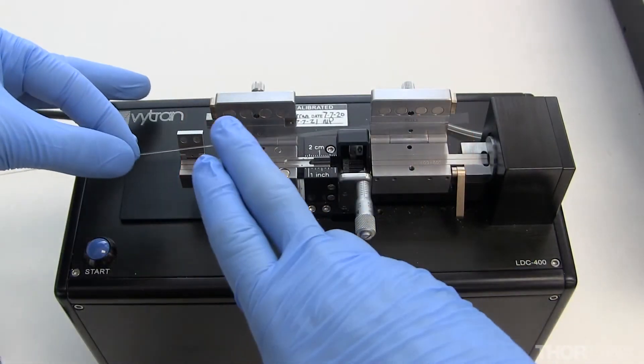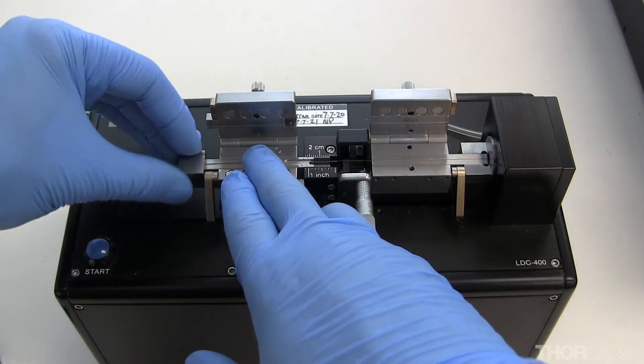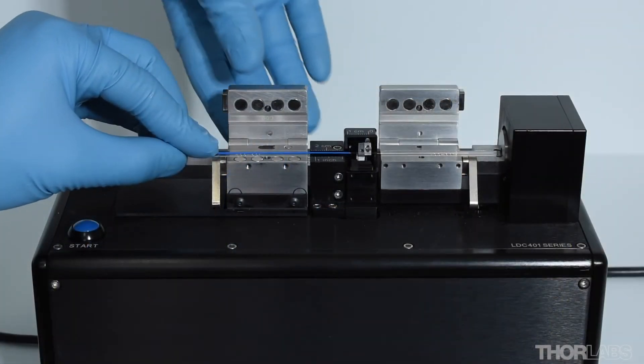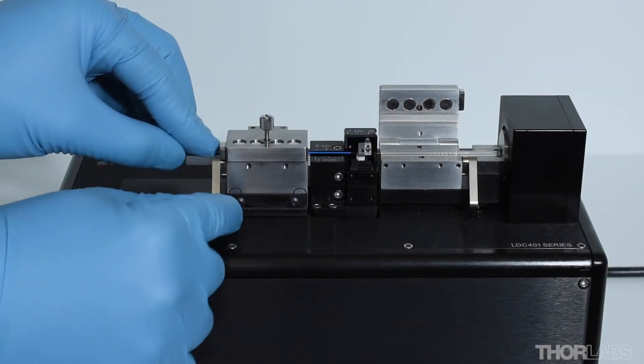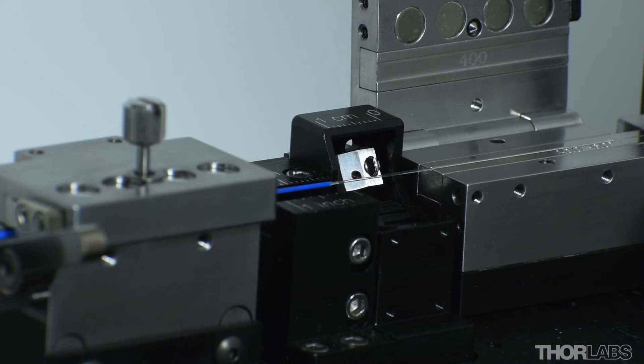Now secure the reference fiber in the left fiber holding block using either a transfer insert or by closing the left fiber holding block lid. Do not clamp the reference fiber in the right fiber holding block. This will prevent damage to the blade when it is moved to the service position.